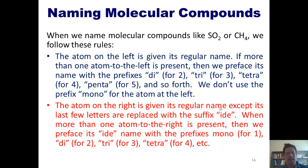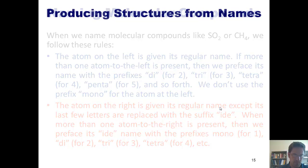The atom on the right is given its regular name, except that its last few letters are replaced with the suffix '-ide'. When more than one atom to the right is present, we preface its '-ide name' with the prefixes mono for 1, di for 2, tri for 3, tetra for 4, penta for 5, hexa for 6, hepta for 7, and so forth.